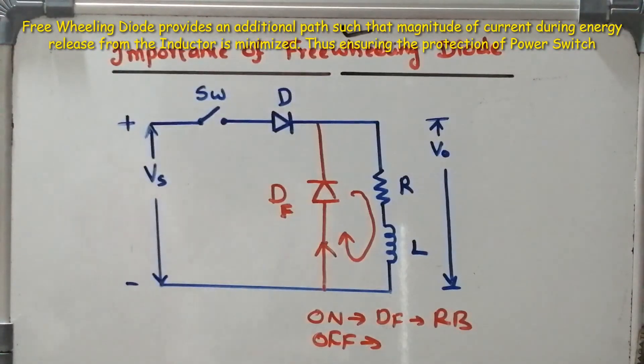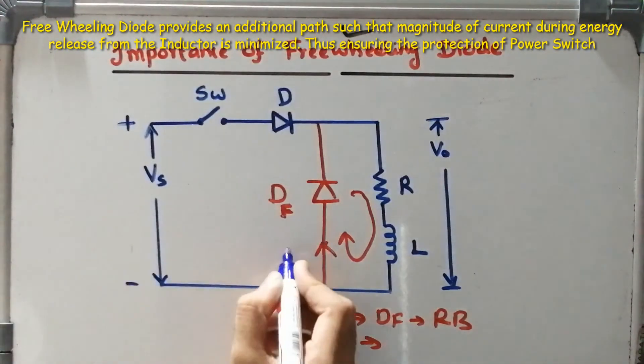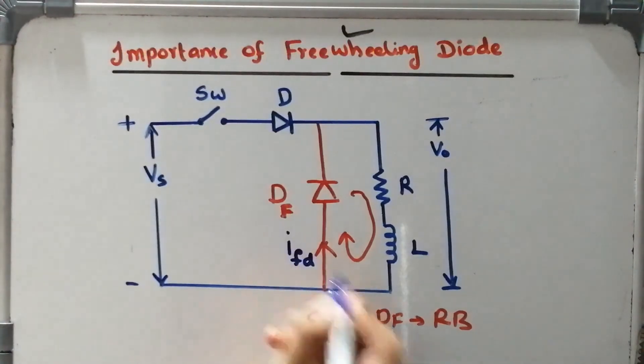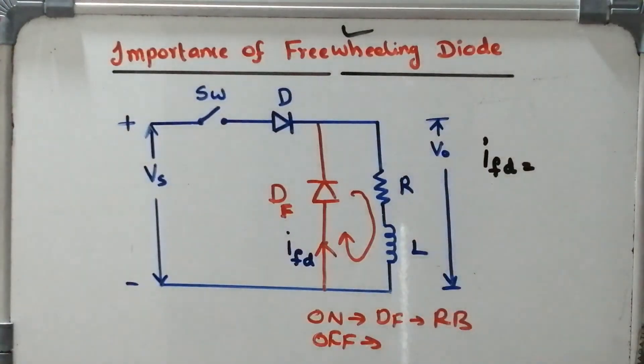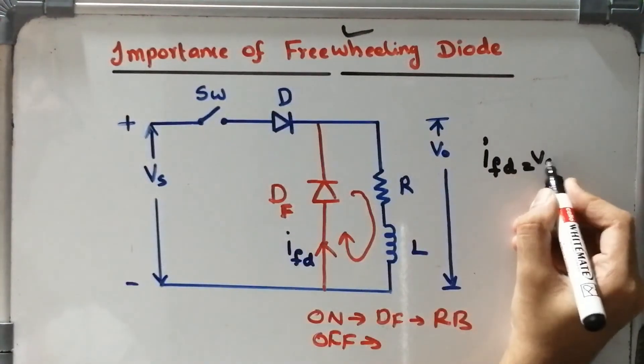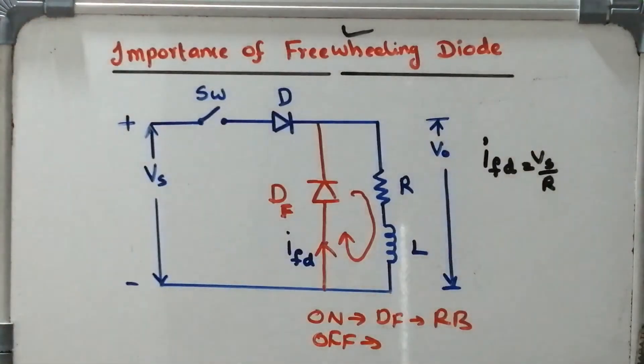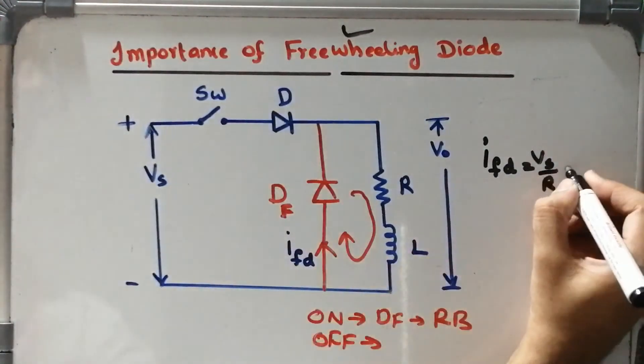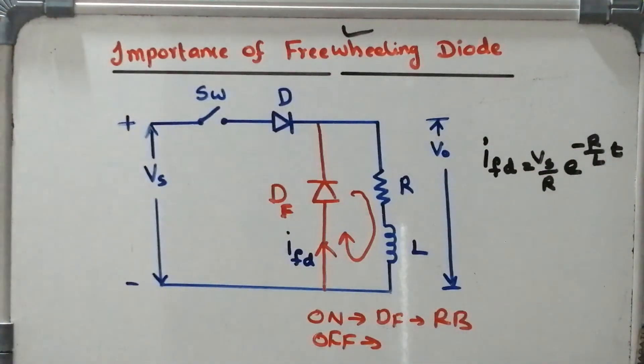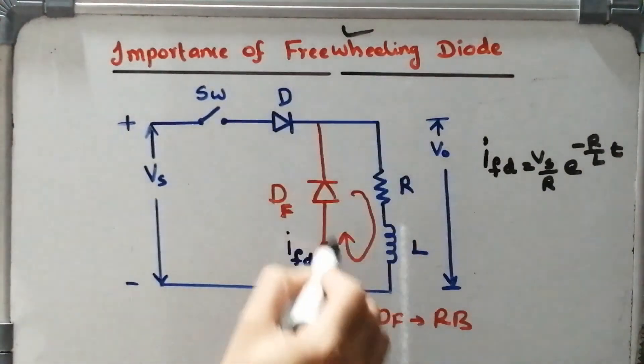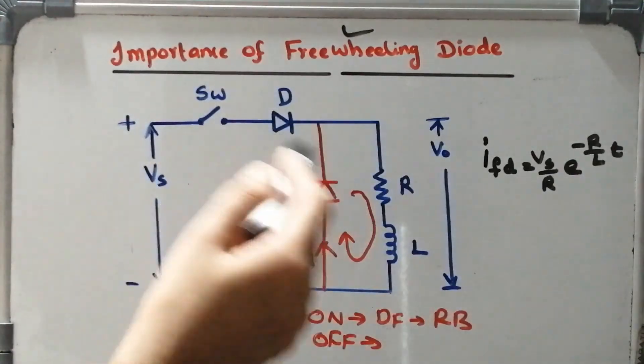Moreover, you can calculate the freewheeling diode current IFT. You can use the formula to calculate the freewheeling diode current which is given here. IFT is equal to Vs divided by R into e to the power minus R by L into T. This is the formula which you can use to calculate the total freewheeling diode current which will be passing in this path whenever switch is at off condition.